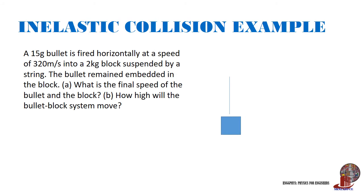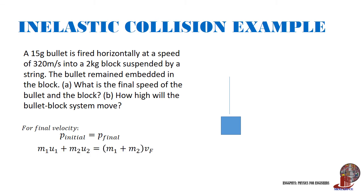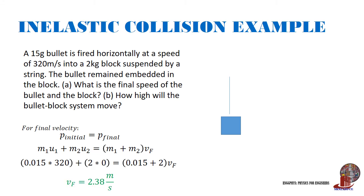The second inelastic collision example: a 15-gram bullet is fired horizontally at 320 meters per second into a 2-kilogram block suspended by a string. The bullet remained embedded in the block. Part A: what is the final speed of the bullet and block? Using conservation of momentum: 0.015 times 320 plus 2 times 0 equals 0.015 plus 2 multiplied by Vf, giving a final velocity of 2.38 meters per second.